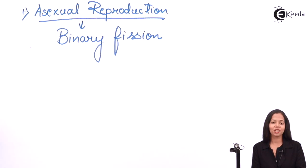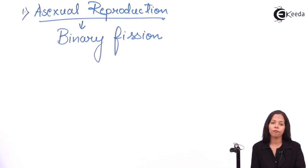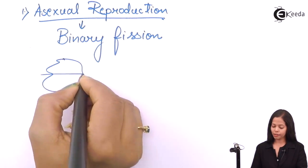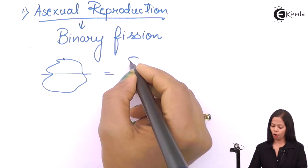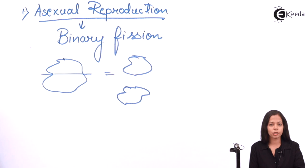Binary means two. Fission means breaking. Breaking into two is called binary fission. It is a type of cell division. Let's take an example of amoeba. Amoeba carries out binary fission. This is the structure of amoeba. It divides into two to form two amoeba, and this process is called binary fission.